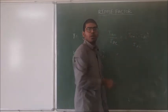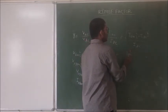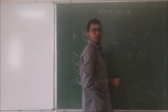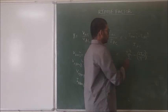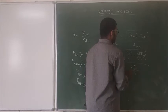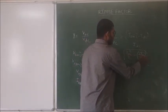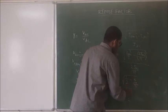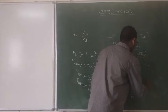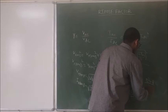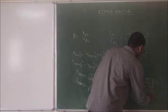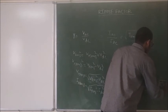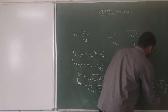Now we are calculating the ripple factor for the full wave rectifier. The I_RMS value for the full wave rectifier is I_M divided by root 2, so I_RMS squared is I_M squared by 2. The I_DC value is 2I_M by π, so I_DC squared is 4I_M squared by π squared. Substituting, the I_M terms cancel, giving the square root of (1/2 minus 4/π squared) divided by (2/π). This simplifies to the square root of (π squared minus 8) divided by 2π squared, giving approximately 0.48.